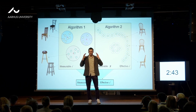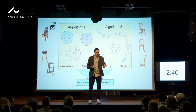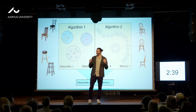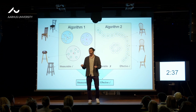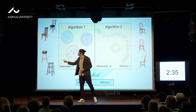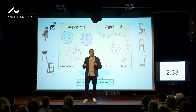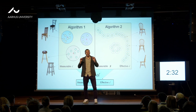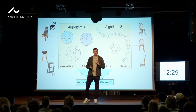At its core, intelligence is all about identifying similarity. I know that's a chair because it looks like every chair I've ever seen, and I know that these chairs and these stools are different. But when we're talking about artificial intelligence, we need to identify similarity between data points.